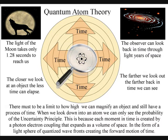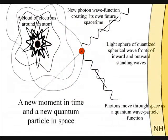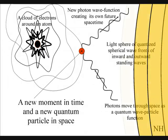There must be a limit to how high we can magnify an object and still have a process of time. When we look down into an atom, we can only see the probability of the Uncertainty Principle.